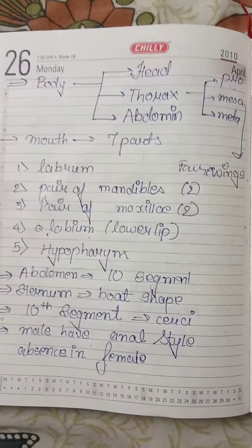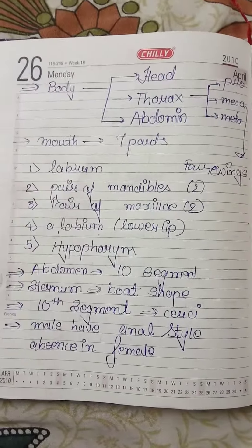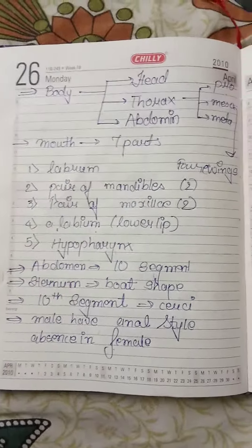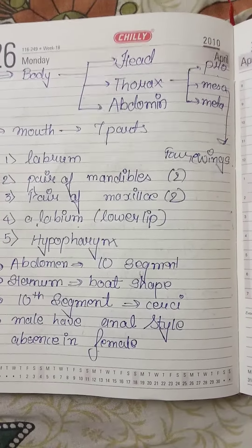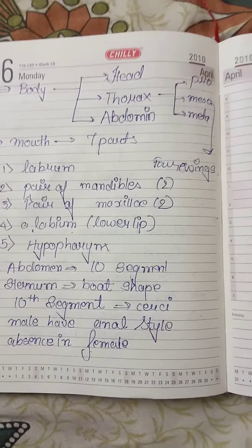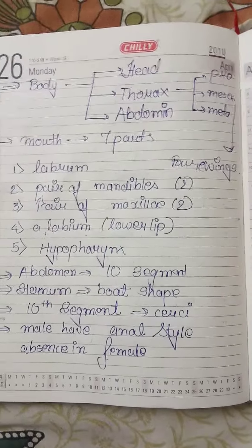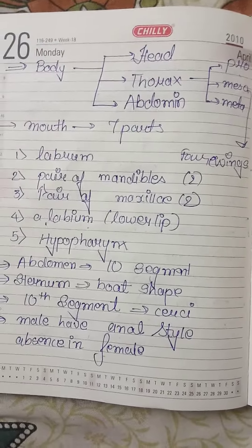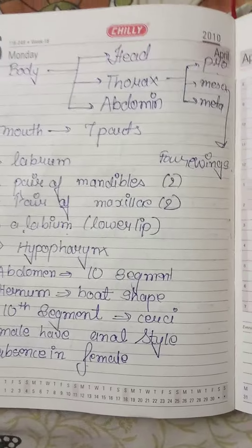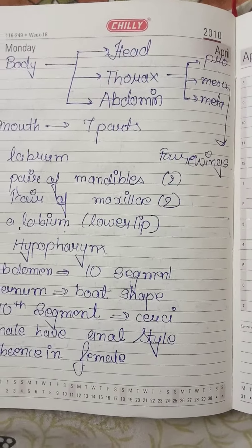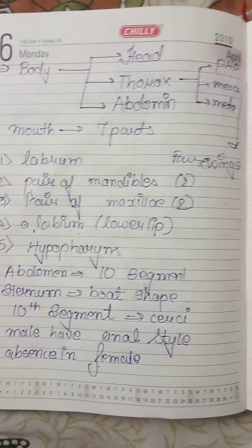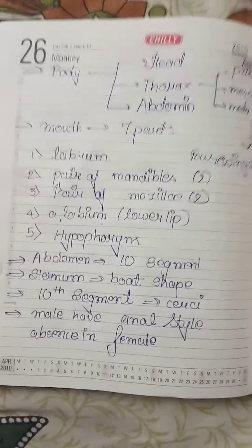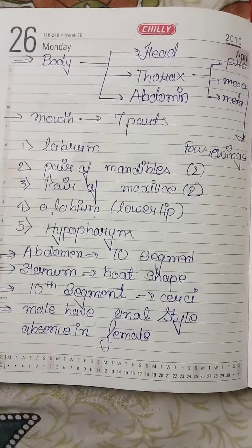In morphology of cockroach, the body is divided into three parts: head, thorax and abdomen. Thorax is divided into pro, meso and metathorax, in which mesothorax is divided into four wings, which are responsible for the flying of cockroaches. Mouth has seven parts.